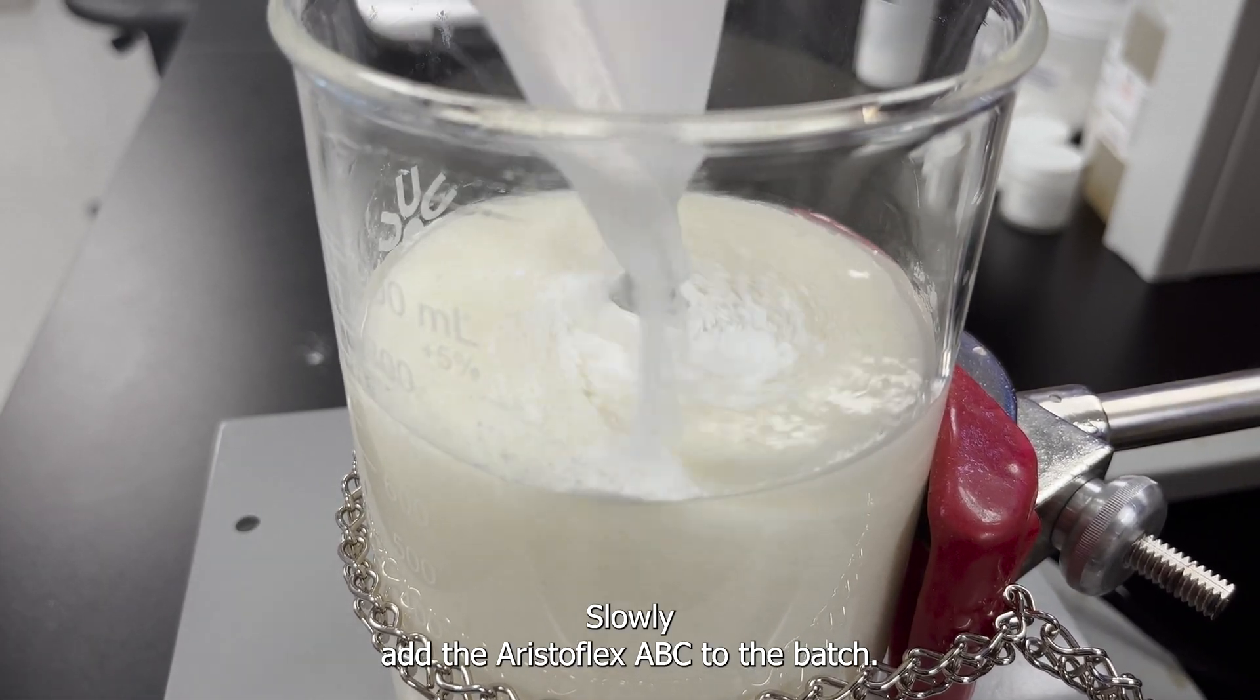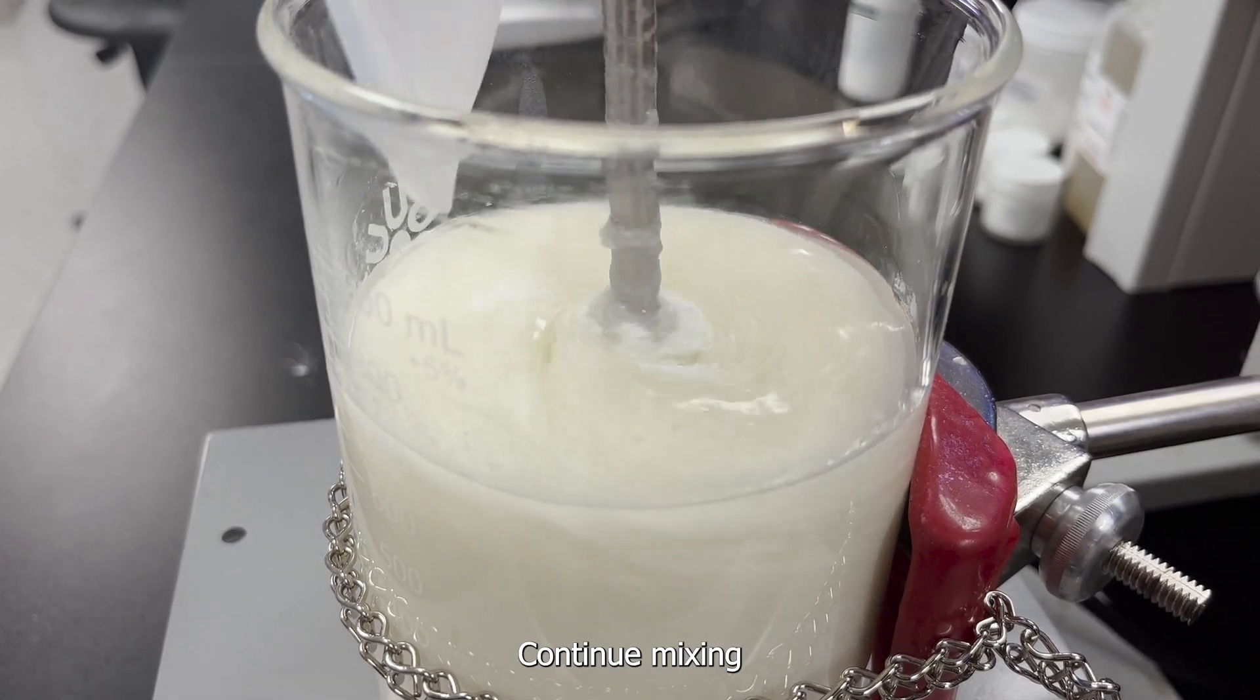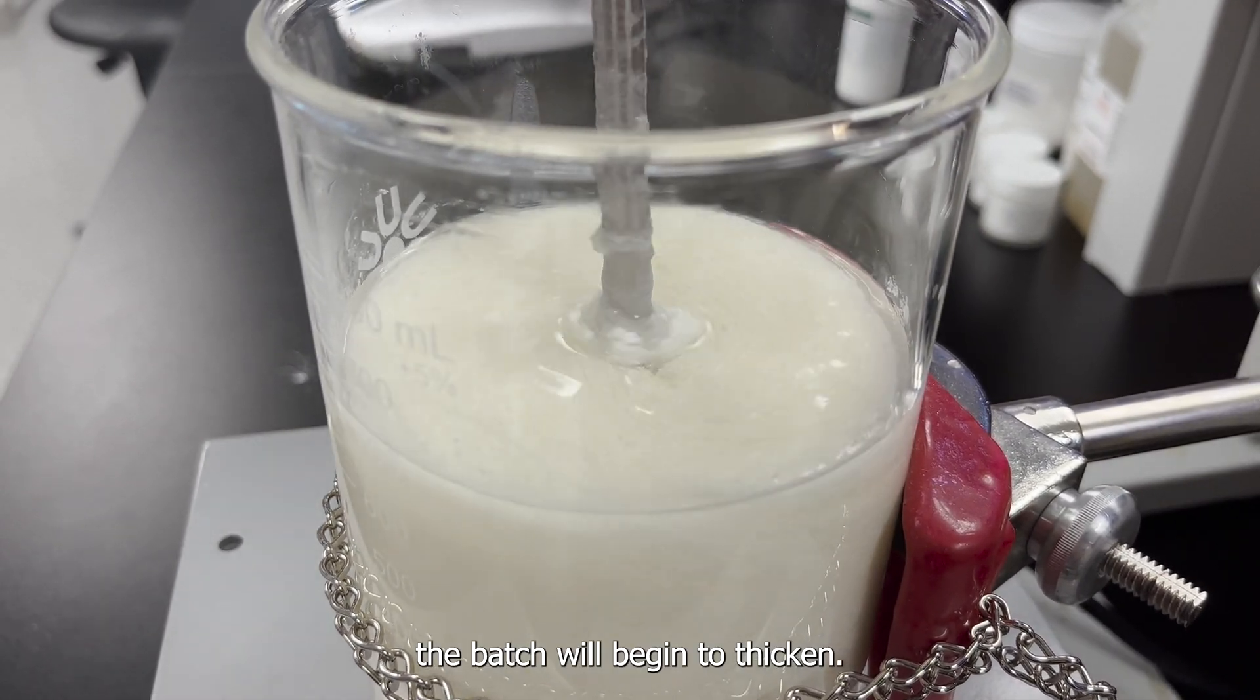Slowly add the Aristoflex AVC to the batch. Continue mixing. The batch will begin to thicken.